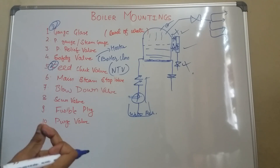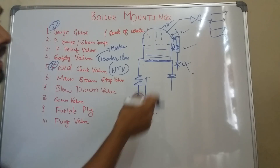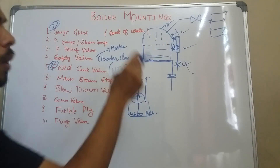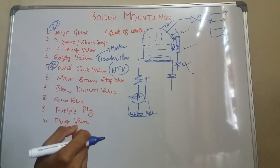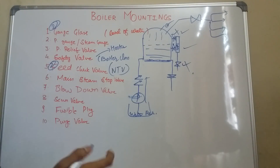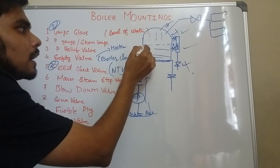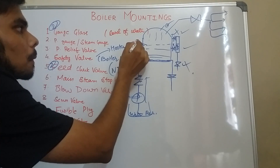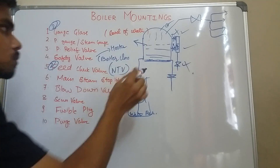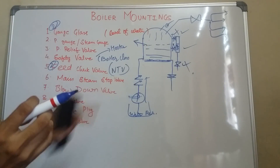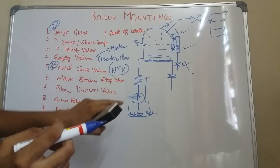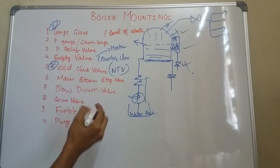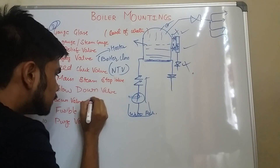The next one is your scum valve. Some amount of oil can be present in the boiler water, so to remove that oil from the boiler we use the scum valve.